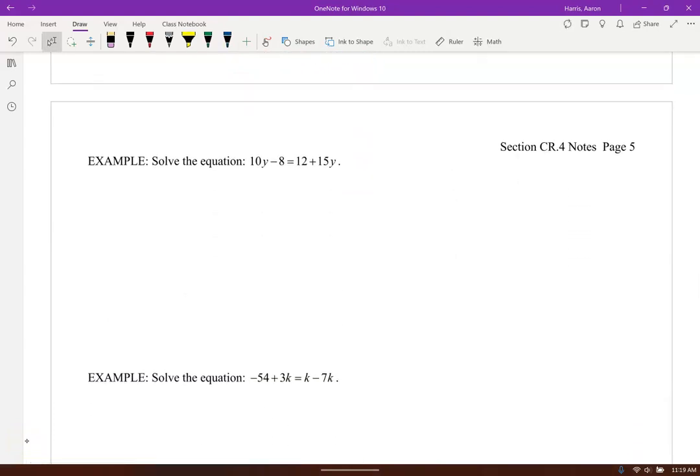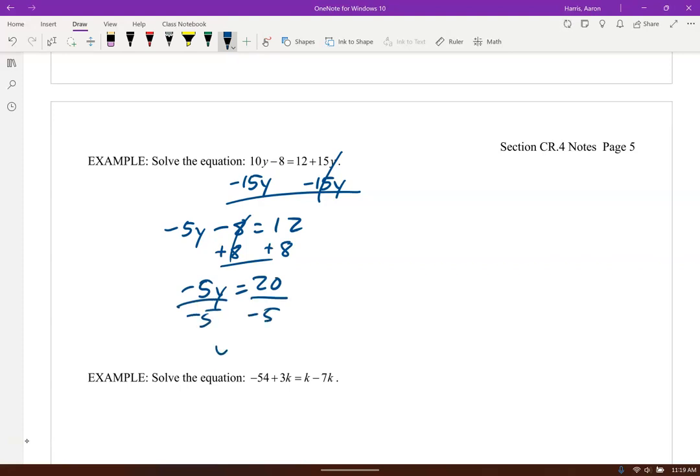Notice this one's got some y's on the left, got some y's on the right. I'm going to go ahead and gather all my y's on one side, all my like terms. So let me subtract the 15y from both sides. 10y minus 15y is negative 5y. I still have minus 8 equals 12. Now I'm going to get rid of that minus 8. So I've got negative 5y equals 20. Now I'm going to divide by negative 5. So we've got negative 4 on that.